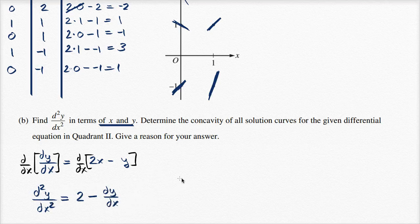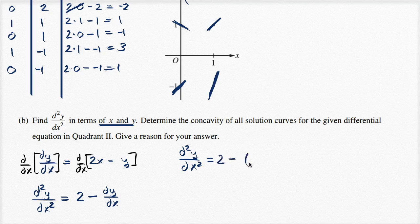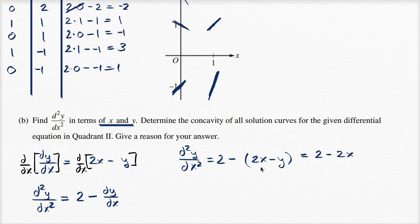So the second derivative of y with respect to x is equal to two minus (2x minus y), which simplifies to two minus two x plus y.